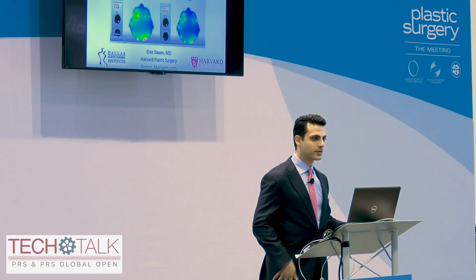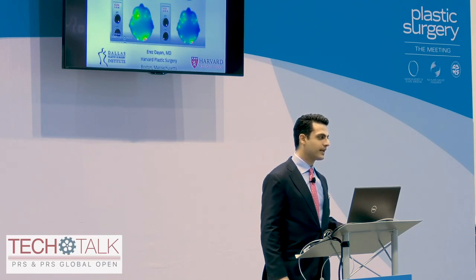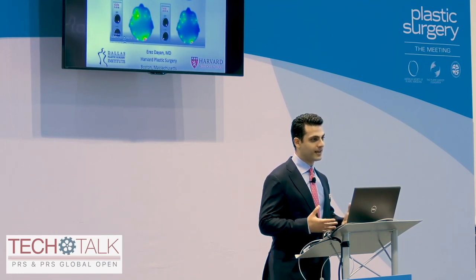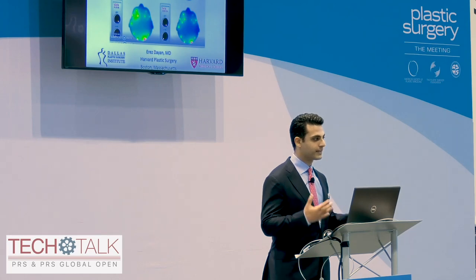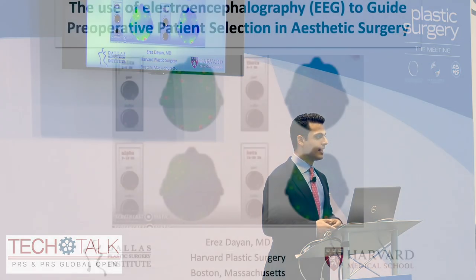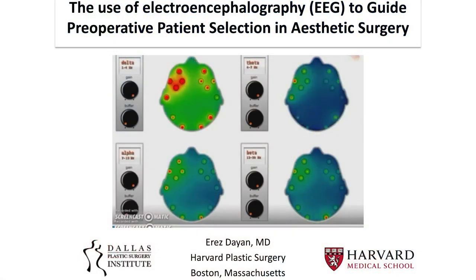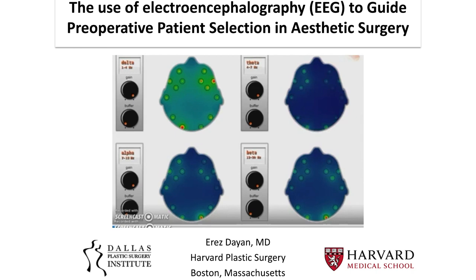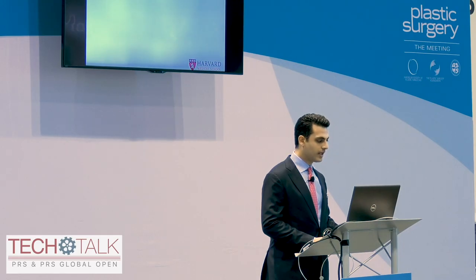The topic of this presentation is how do we select patients in aesthetic surgery. Many times a patient comes to you with certain expectations that we think we can meet, and how that patient responds is not always clear to us. So how can we use technology to better define what the patient experience is and how to select patients? That's really the question.